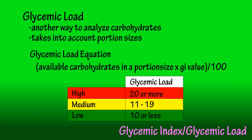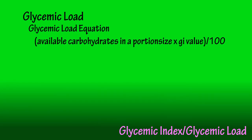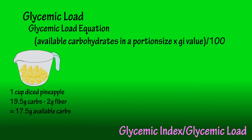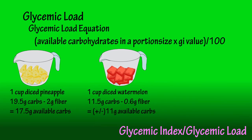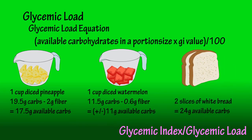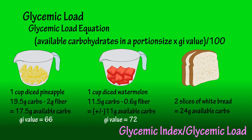Let's look at a couple of examples. A serving size of one cup of diced pineapple contains 19.5 grams of carbohydrate and 2 grams of fiber, giving it 17.5 grams of available carbohydrates. One cup of watermelon contains about 11.5 grams of carbohydrate and 0.6 grams of fiber, so roughly 11 grams of available carbohydrates. Two slices of white bread contain about 24 total grams of available carbohydrates. The GI value of pineapple is 66, watermelon is 72 — putting it in the high GI category — and white bread has a GI of 70.